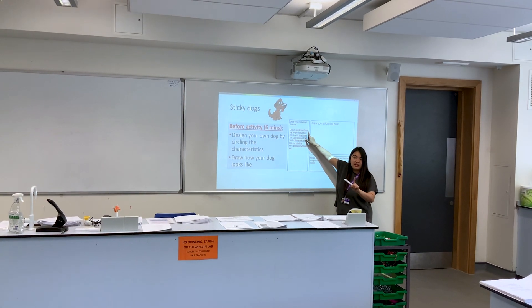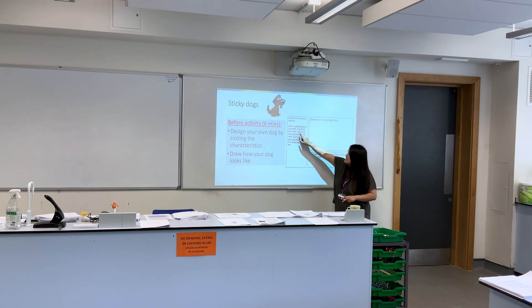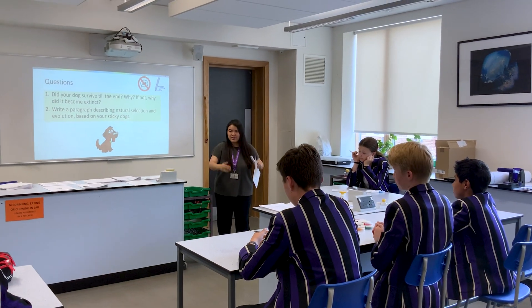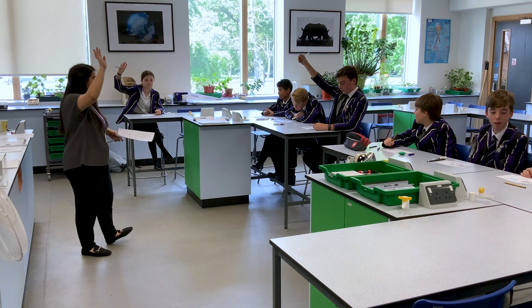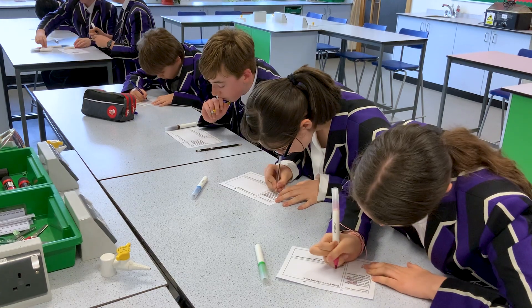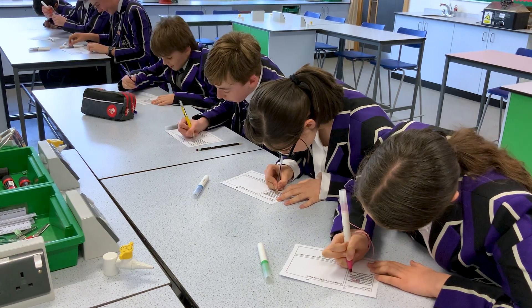The second activity is sticky dogs. It is a rather simple setup as you just need some 'design your dog' sheets and a script. Each student is given a design your dog sheet. Students then need to design a dog by circling the features they want on the left column and drawing their dog on the right box. Each student starts with ten of their designed dogs, as shown by the tallies in the bottom box.